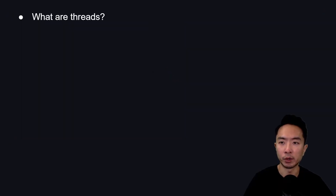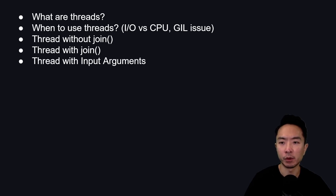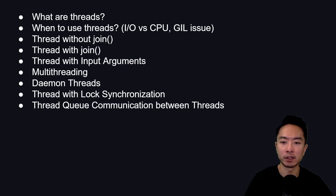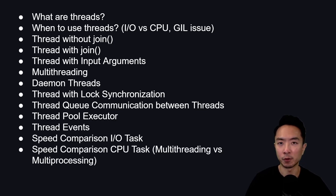We're going to be talking about what are threads, when to use threads, threads without join, using join, thread with input arguments, multi-threading, daemon threads, threads with lock synchronization, thread queue communication between threads, thread pool executor, thread events, speed comparison for input-output tasks, and speed comparison for CPU tasks. We're also going to be comparing some of the differences between multi-threading and multi-processing.